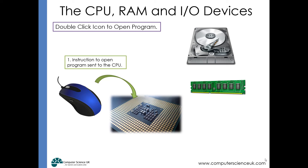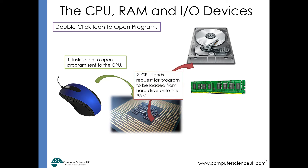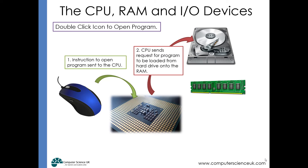The CPU, being the brain of the computer, recognises that the program is stored on the hard drive — the long-term storage. It knows we need to retrieve that particular program from the hard drive so that we can start working with it. So the CPU sends a request for that program to be loaded from the hard drive onto the RAM.